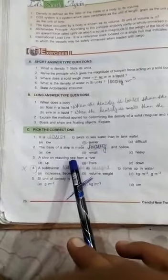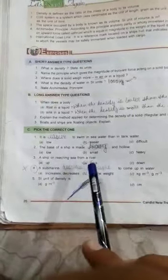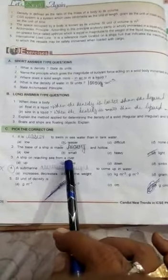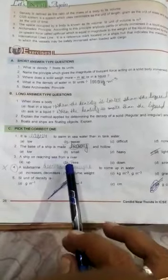A ship on reaching sea from a river rises. It will rise because density of sea water is more, so more will be upthrust.